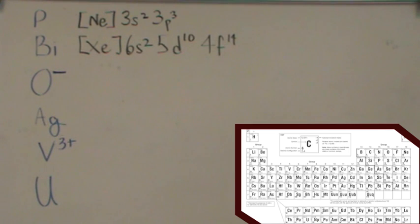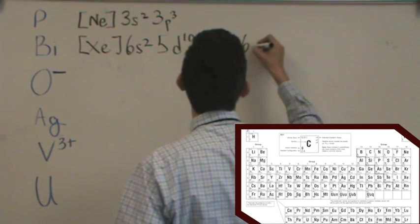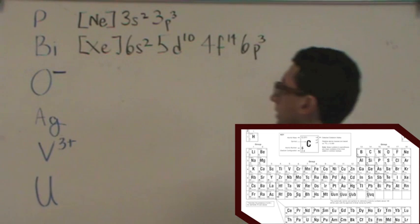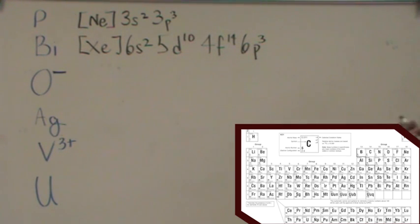Finally, you're going to go thallium, lead, bismuth. And so that's the, let's see, let me count down which P level that would be. That would be the 6P3. And there you go. There's bismuth. It's similar to phosphorus, just down in the same column. But we're adding the D's and the F's.